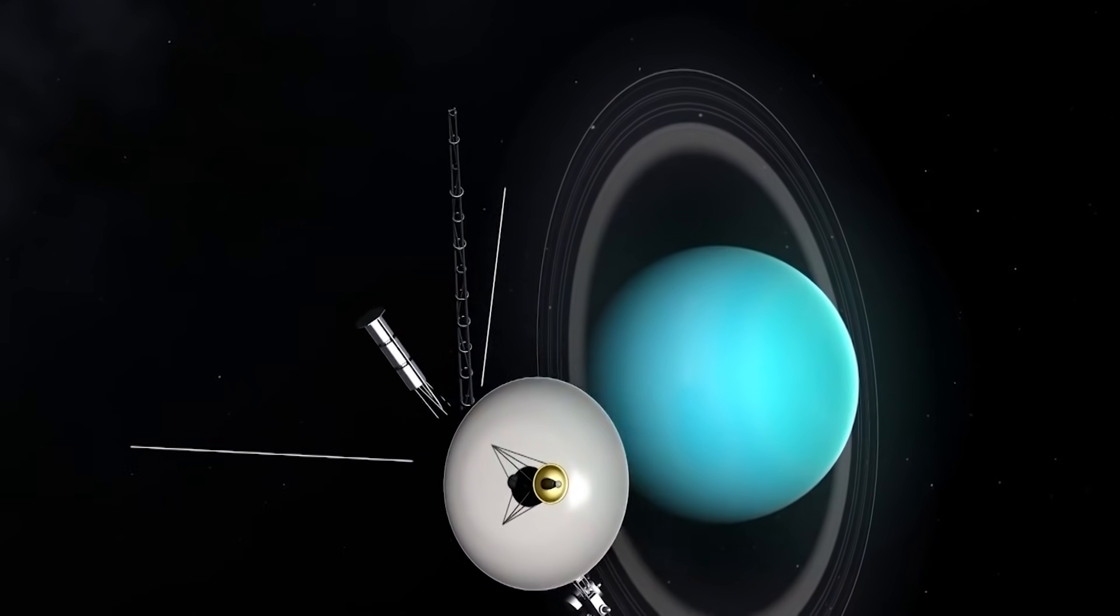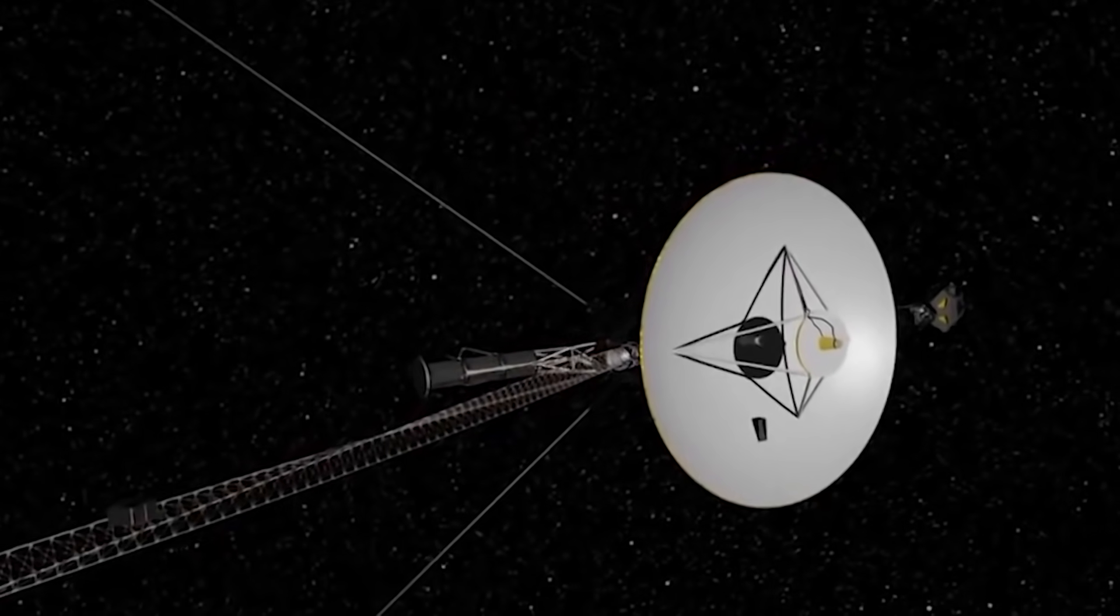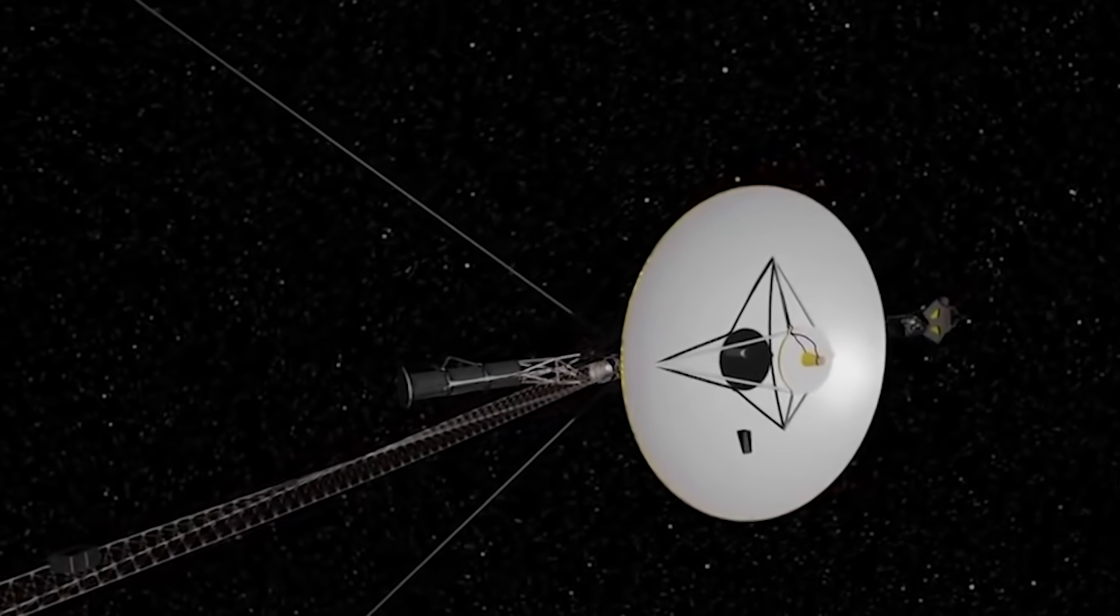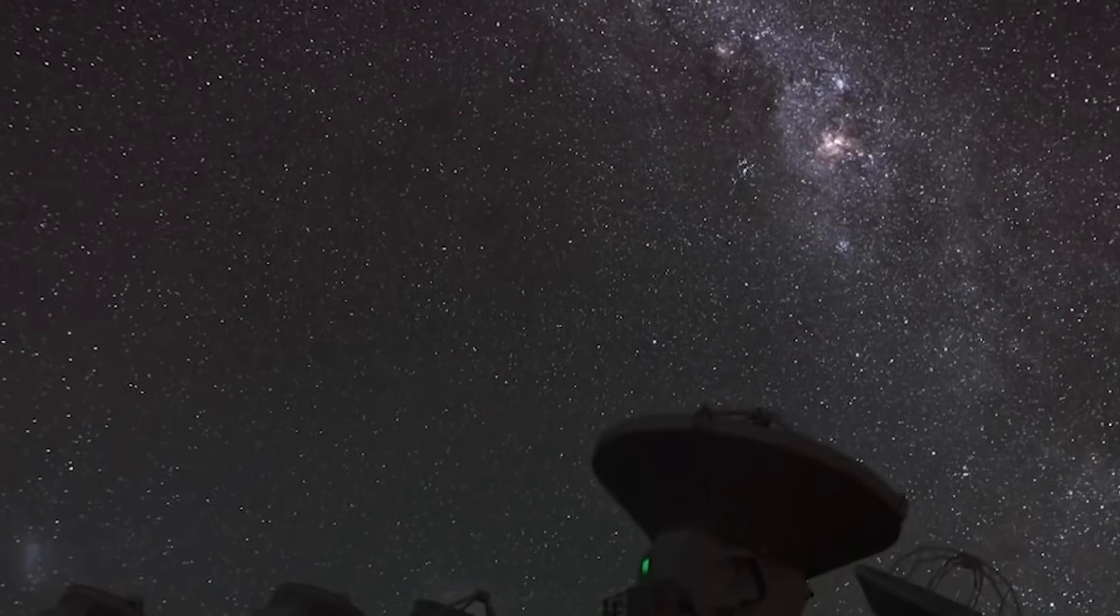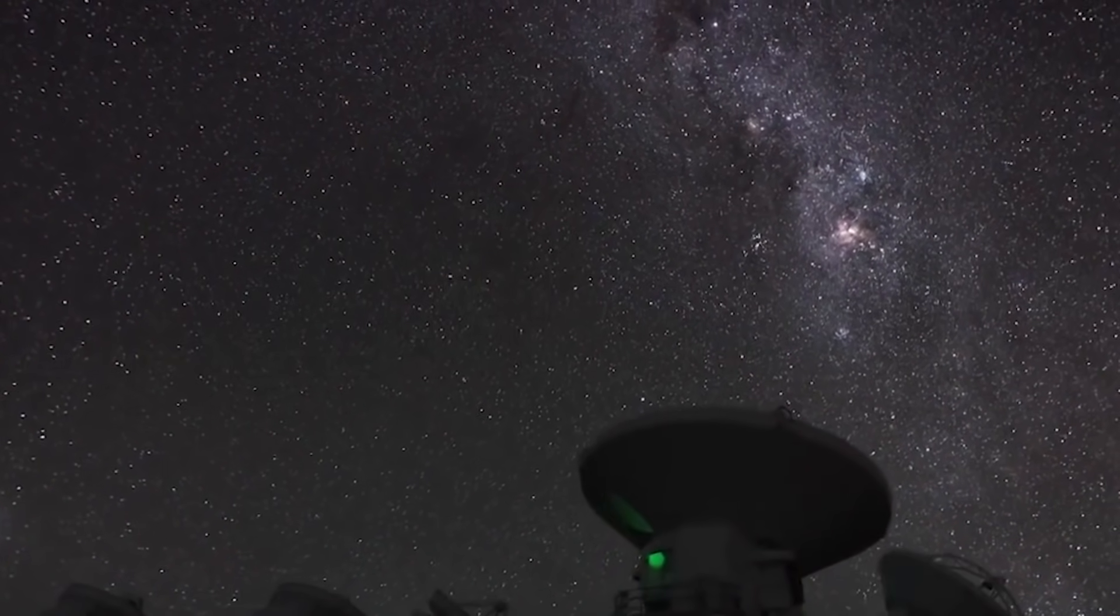To approach Triton, Neptune's largest moon, the probe flew over the North Pole, and this maneuver caused its trajectory to move so far south that the antennae in Earth's northern hemisphere lost connection, since it fell out of their visibility zones.